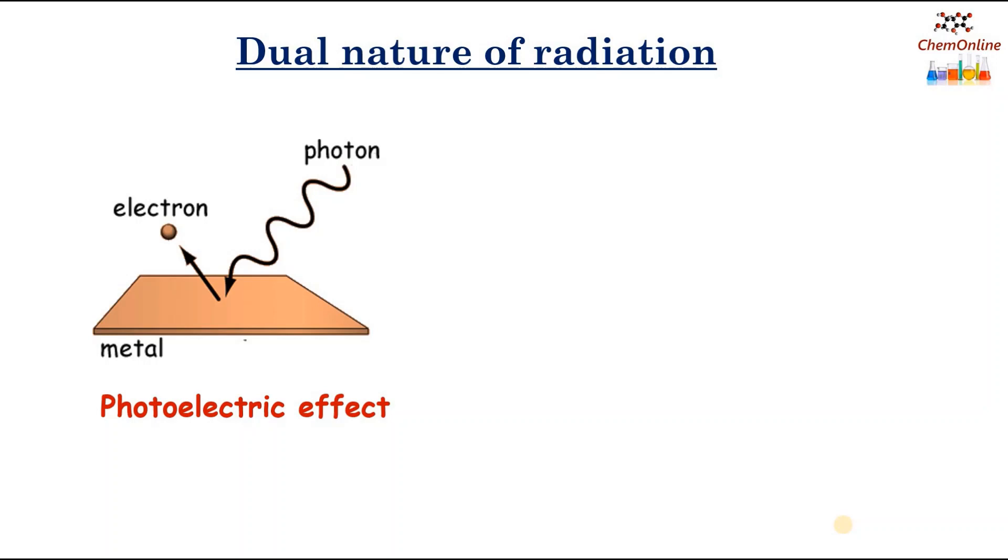But we also have the phenomenon of photoelectric effect. That is, when light falls on a metal surface, the electrons are ejected from it. This phenomenon, that is, the photoelectric effect, can be explained only when we consider the light as a particle, that is, a photon. So, this confirms the particle nature of light.